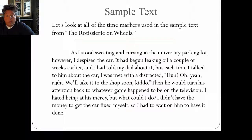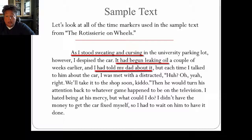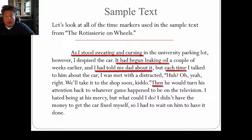I begin this paragraph with a time marker: 'as I stood sweating and cursing,' so you know what is happening in the story. Then I say 'it had begun leaking oil a couple of weeks earlier' — so while I was standing there sweating, a couple of weeks earlier it had begun leaking oil. Then 'I had told my dad about it,' and 'each time I talked to him about the car' lets the reader know there were several occasions. Then 'he would turn his attention' — after I talked to him, that's when he would go back to watching TV. Those are just a few of the time markers present in the entire story posted on the website.